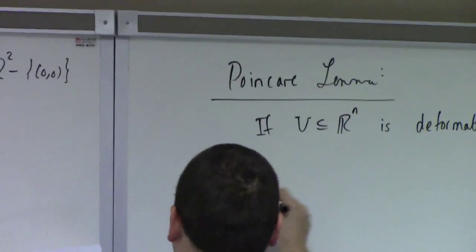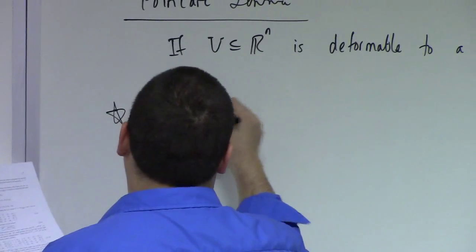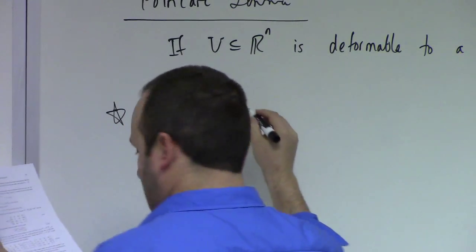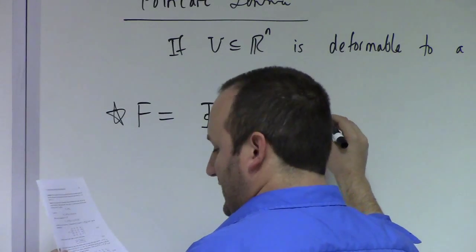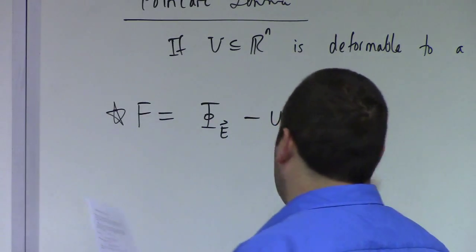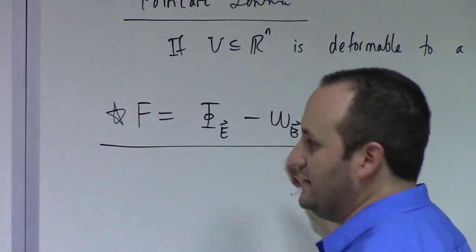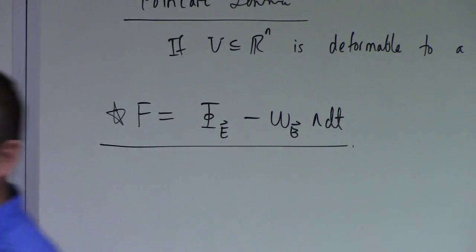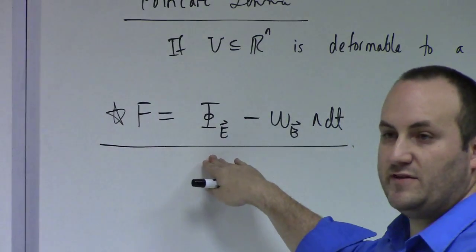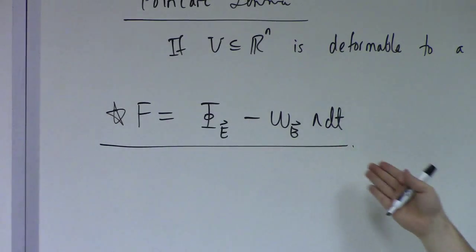So let me say this much: the Hodge dual of the Faraday tensor works out to the flux form of the electric field minus the work form of the magnetic field wedge dt. See the juxtaposition of the electric and magnetic fields? The Faraday has a flux form of the magnetic field; the Hodge dual has a flux form of the electric field. See how the role of the electric and magnetic fields have been flipped over?